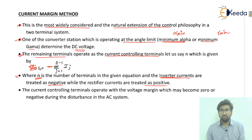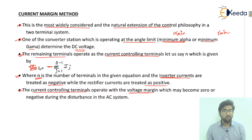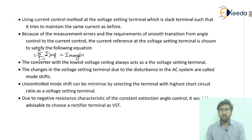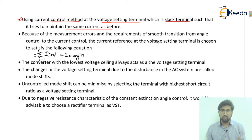The current-controlling terminals operate with a voltage margin, which may become zero or negative during disturbances in the AC system. Using the current control method, the voltage-setting terminal acts as a slack terminal, trying to maintain the same current as before — whatever the current was in normal conditions remains the same after a disturbance.